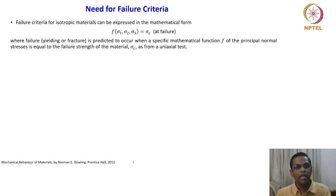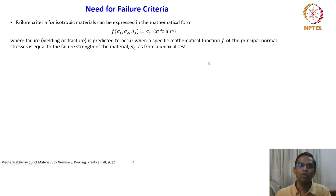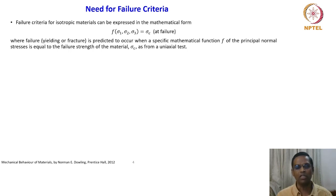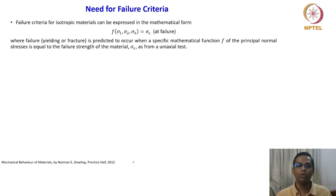Failure — yielding or fracture — is predicted to occur when a specific mathematical function f of the principal normal stresses equals the failure strength of the material sigma_c, as from the uniaxial test. The critical stress, whatever the yield theory is predicting, must be relatable to what we can already determine with a simple uniaxial tension test. That is the key question.